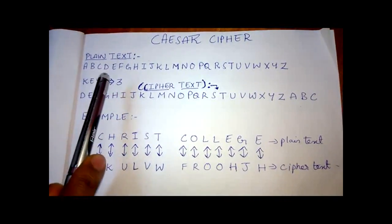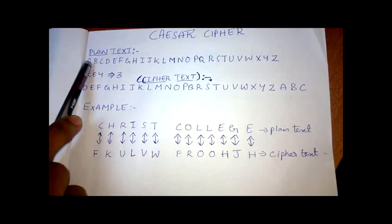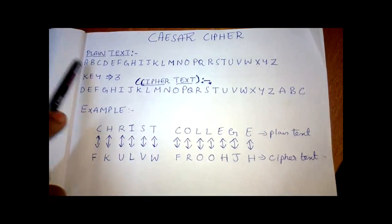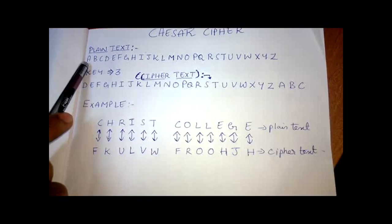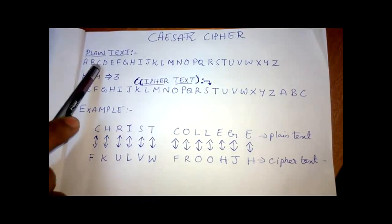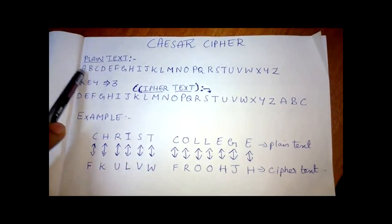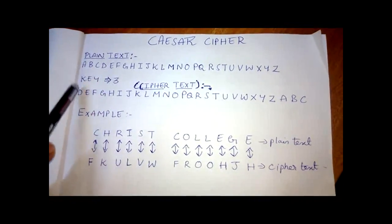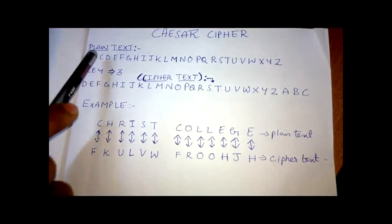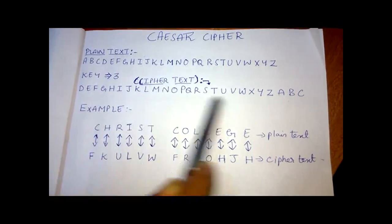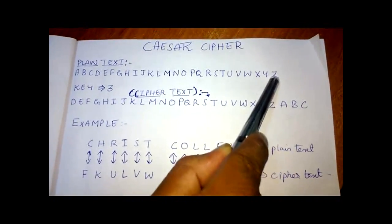As we have chosen the key value as 3, we will encrypt the first alphabet A. So A is encrypted in such a way that A is 1, B is 2, C is 3. So 3 alphabets are moved in front and A is encrypted as D. So A is equal to D, B is equal to E, C is equal to F. It goes on the same way till C as Z. So Z is represented as C.